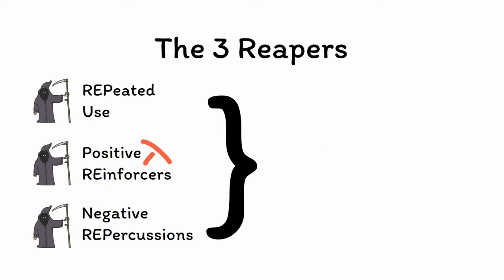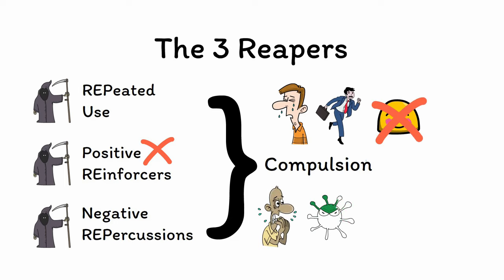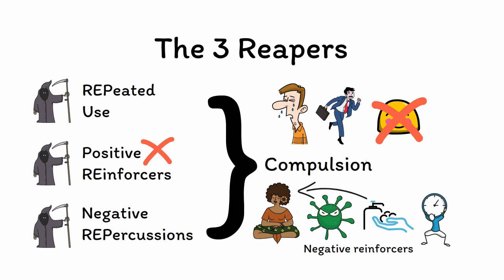Finally, repeated use of things that are not positively reinforcing despite negative consequences is most tempting to call an addiction, but it's more accurately characterized as a compulsion. A compulsion is when someone does a behavior repeatedly to escape a negative feeling rather than seek a positive one. For example, someone with OCD may wash their hands eight hours a day, suffering physical injuries as a result, but because hand washing removes distress rather than gives pleasure — making it negatively rather than positively reinforcing — it's a compulsion, not an addiction.